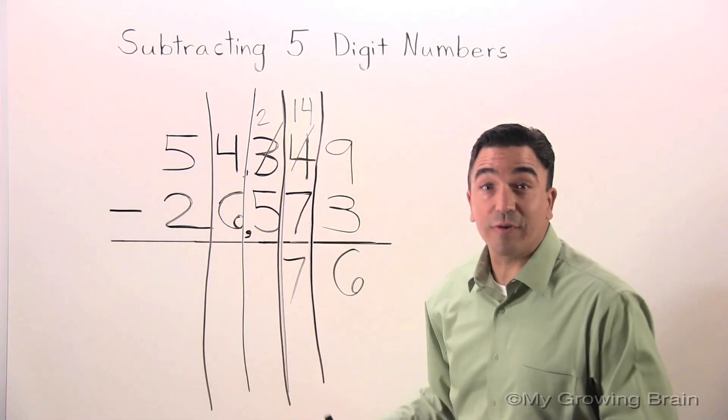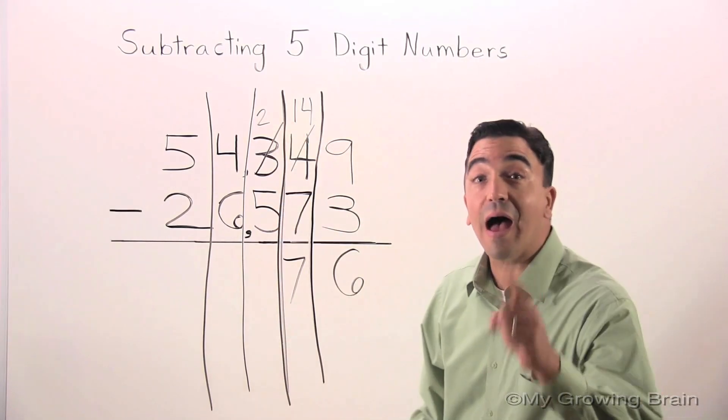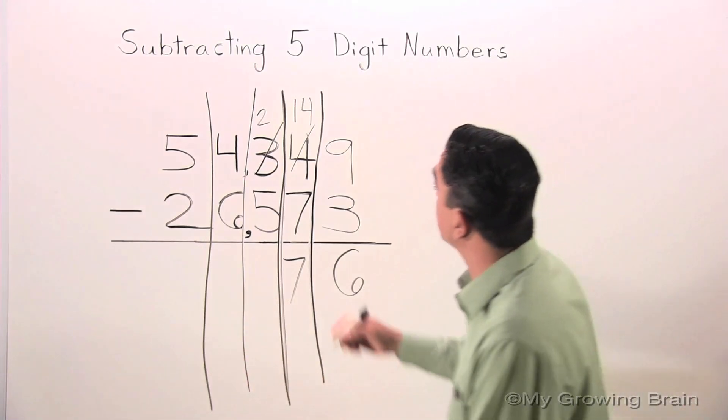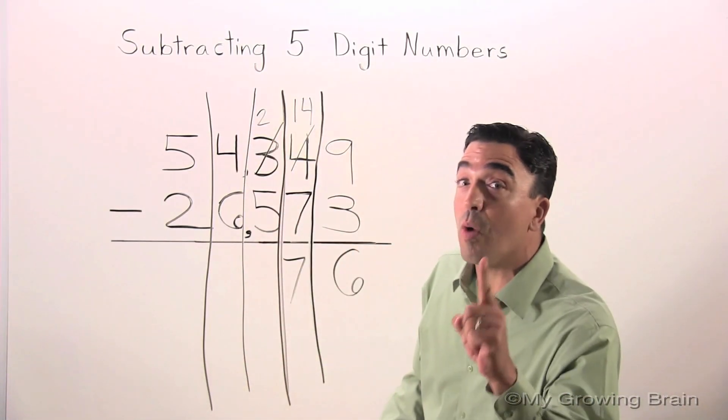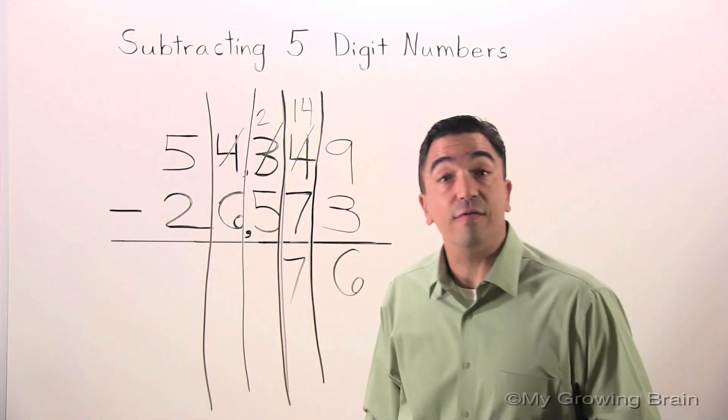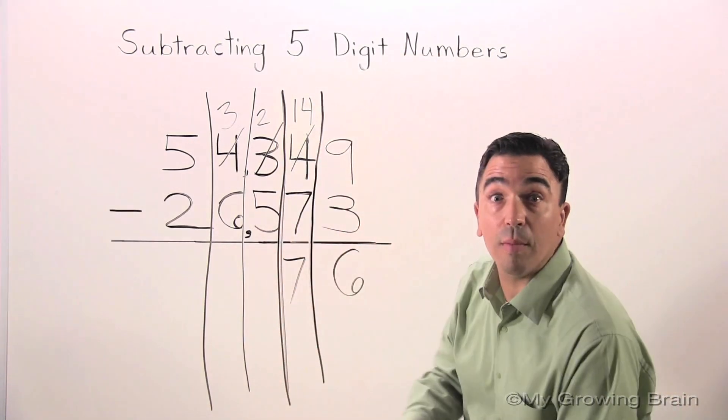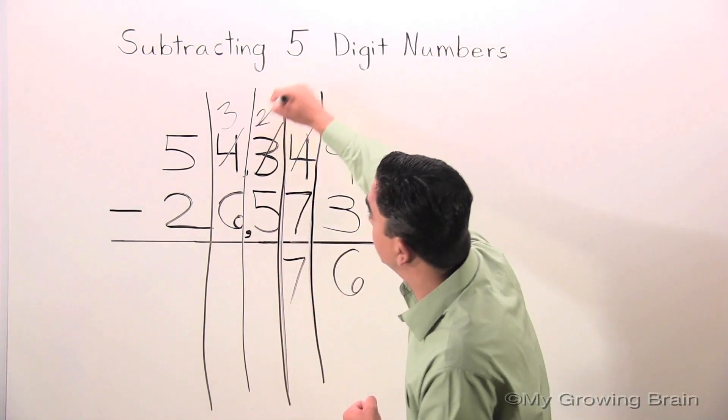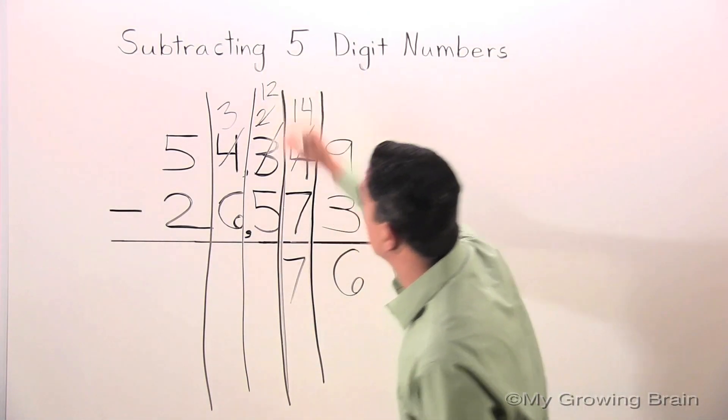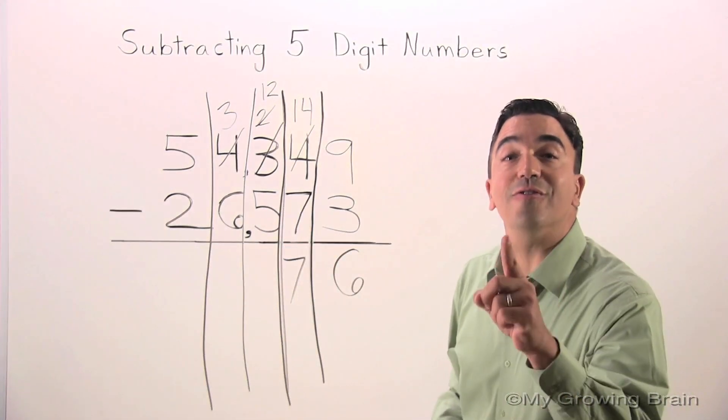Let's go to the hundreds place. Oh, I can't subtract five from two. I need to borrow again or regroup. I'm going to take a one away from the four. That gives us three. Carry it over, or bring it over. The two becomes a 12. 12 minus five is seven.